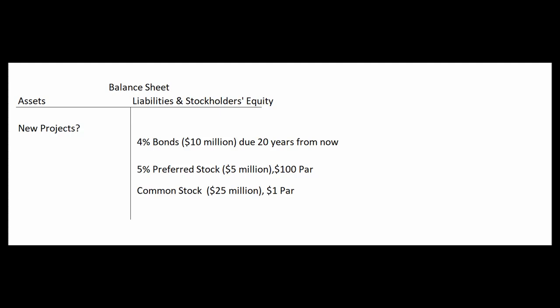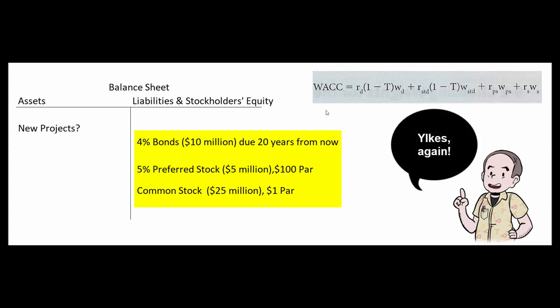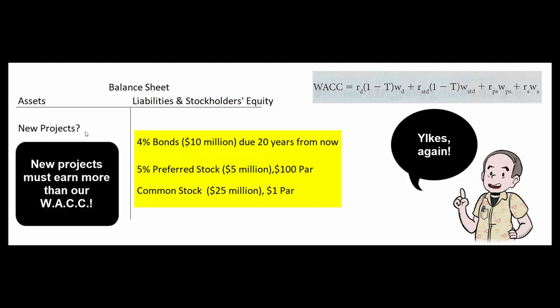Well, what do we mean by the weighted average cost of capital? Our weighted average cost of capital is what our money costs us on the right-hand side of the balance sheet. As an aside, we're only going to enter into new projects on the left-hand side - new stores, new warehouses, new factories - that earn more than what our money costs us on the right-hand side of the balance sheet.